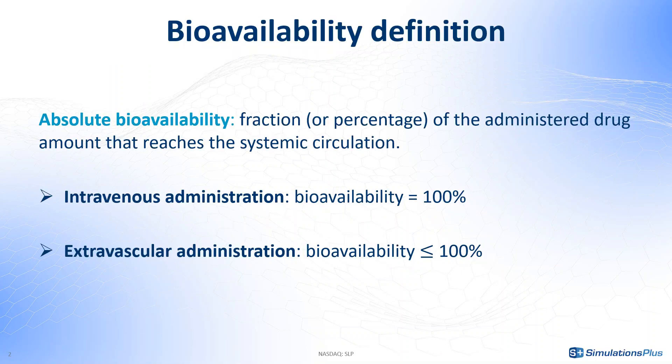Let's first understand what bioavailability is. The bioavailability is the percentage of the administered drug amount that reaches the systemic circulation. If you give the drug intravenously, the bioavailability is 100% as you inject the totality of the drug directly in the systemic circulation. But if the drug is given orally, subcutaneously, or by any other extravascular route, part of it will be lost before reaching the bloodstream. For instance, for an oral dose, the drug needs to cross the intestinal wall and go through the liver before reaching the systemic circulation. Only a fraction of the dose will remain after these steps.